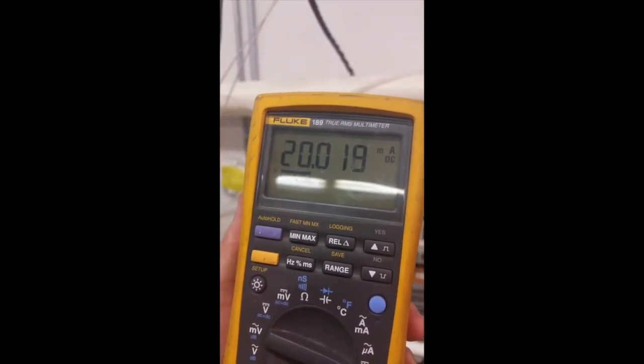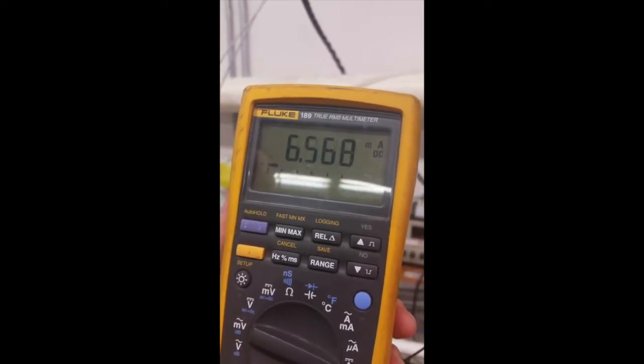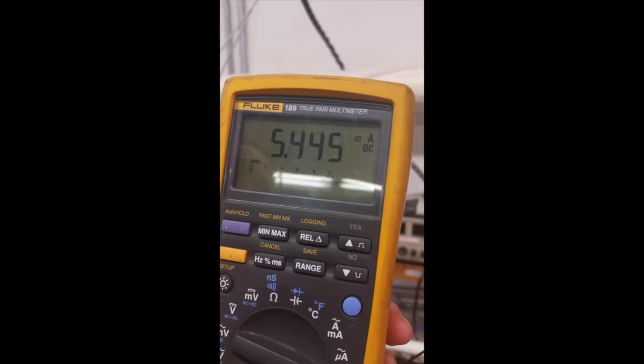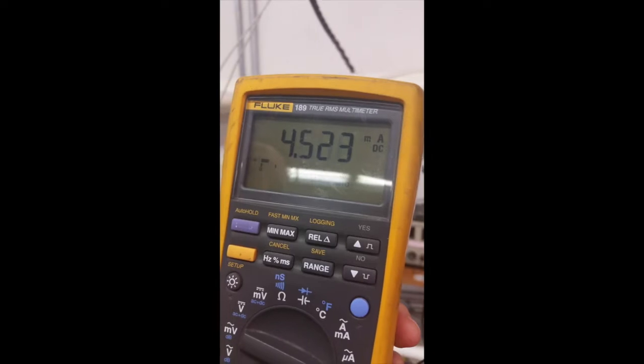Notice that the meter shoots up to 20 milliamps full scale and returns back down to around 4. We're at zero to no flow here, so we'll be roughly around 4 milliamps.